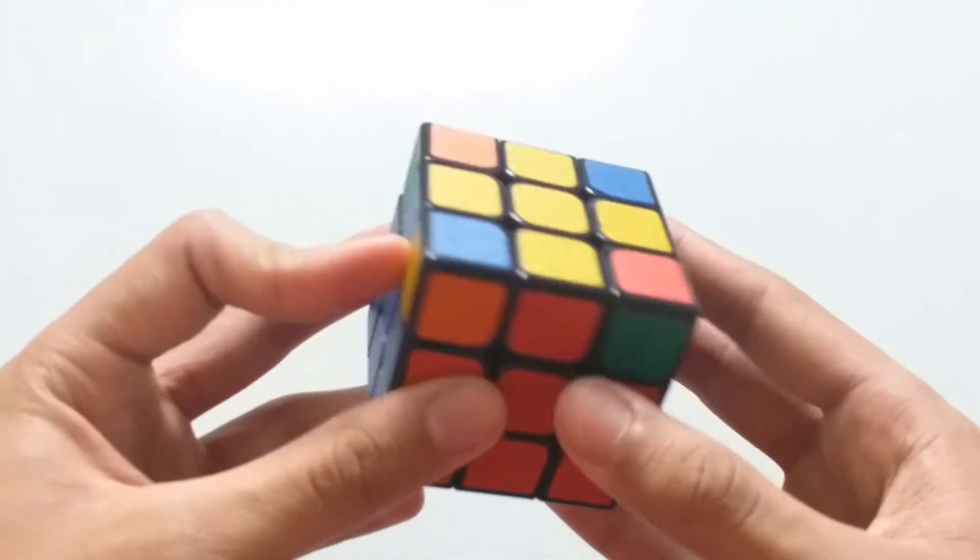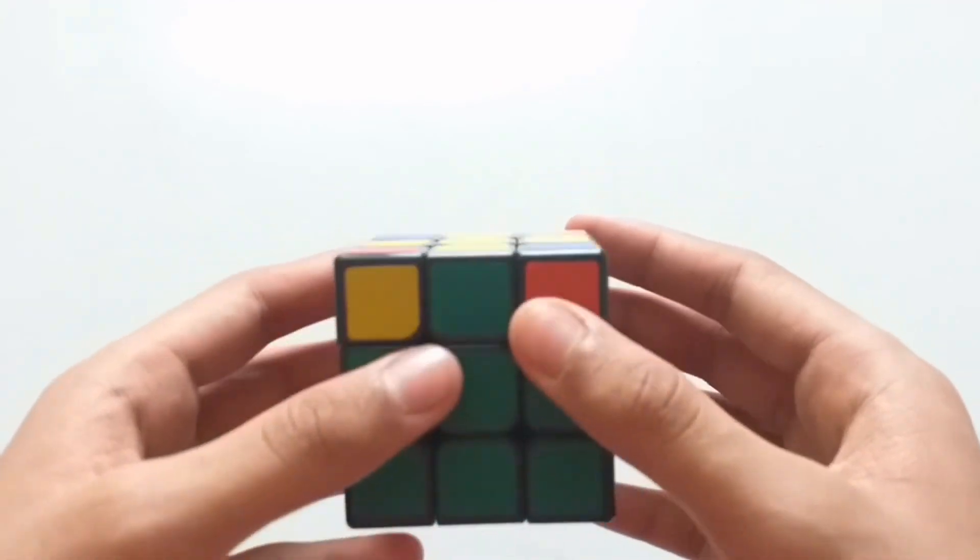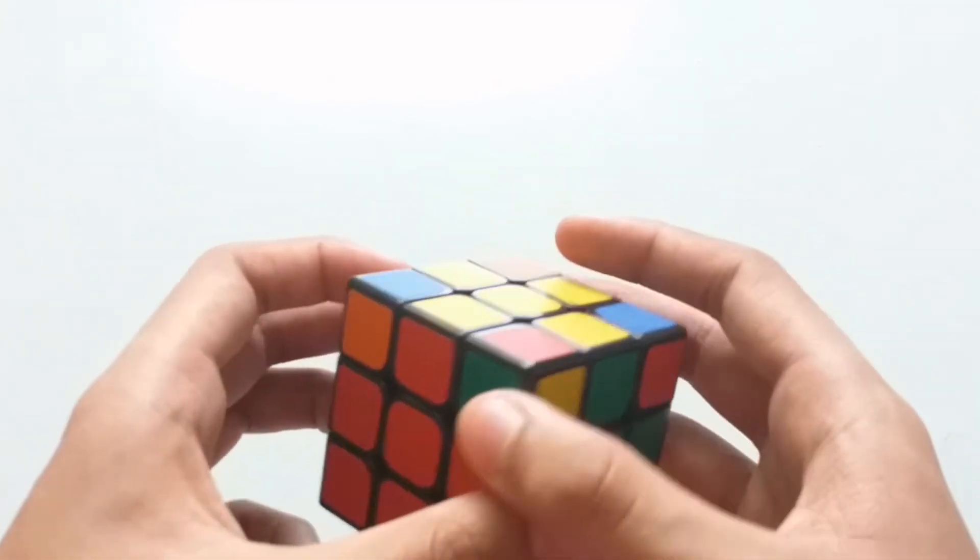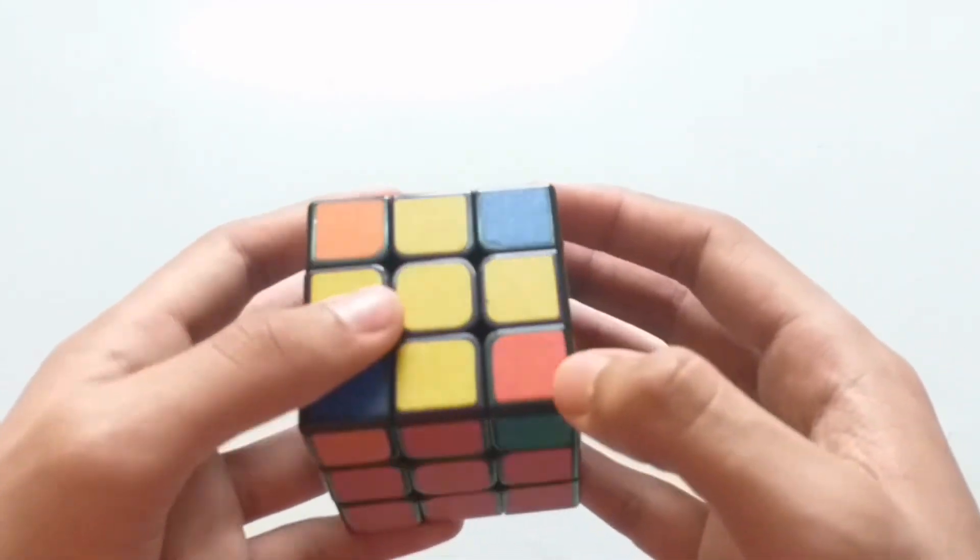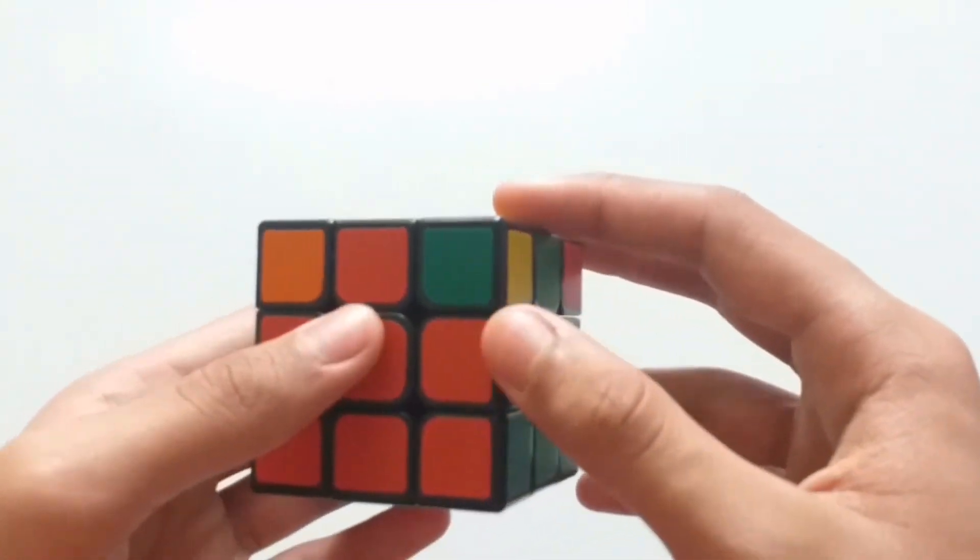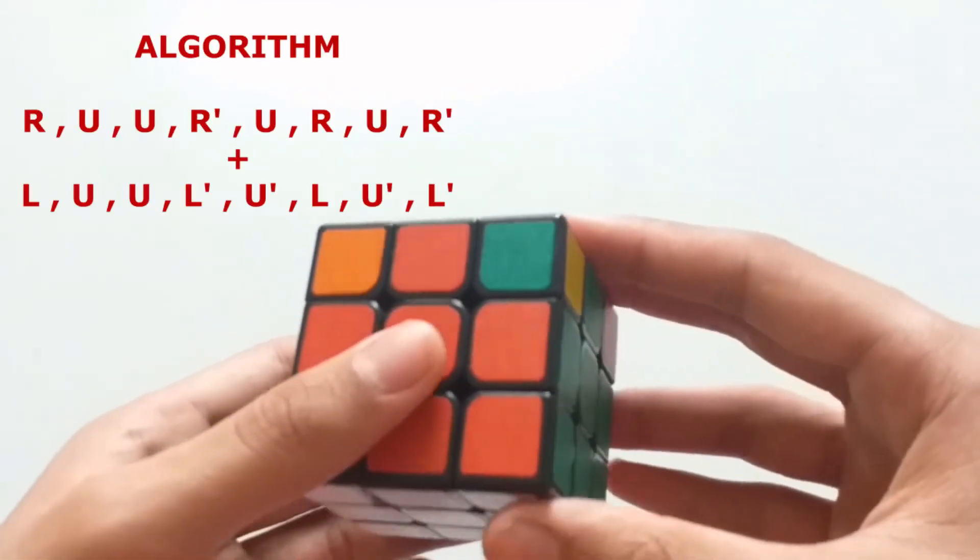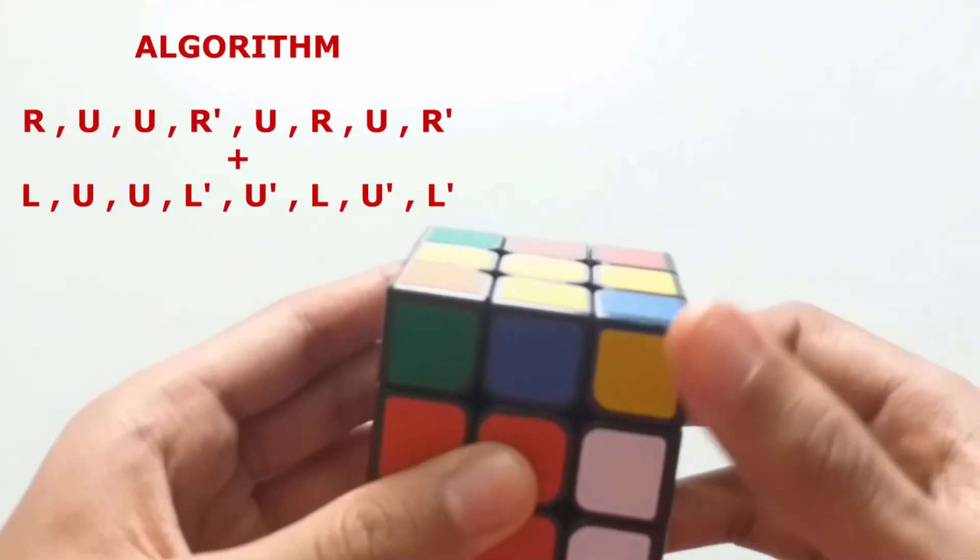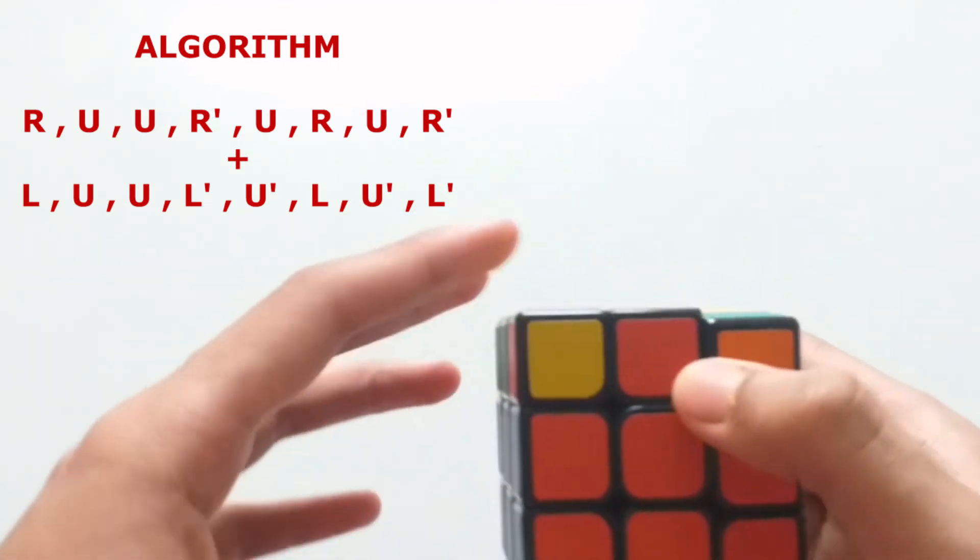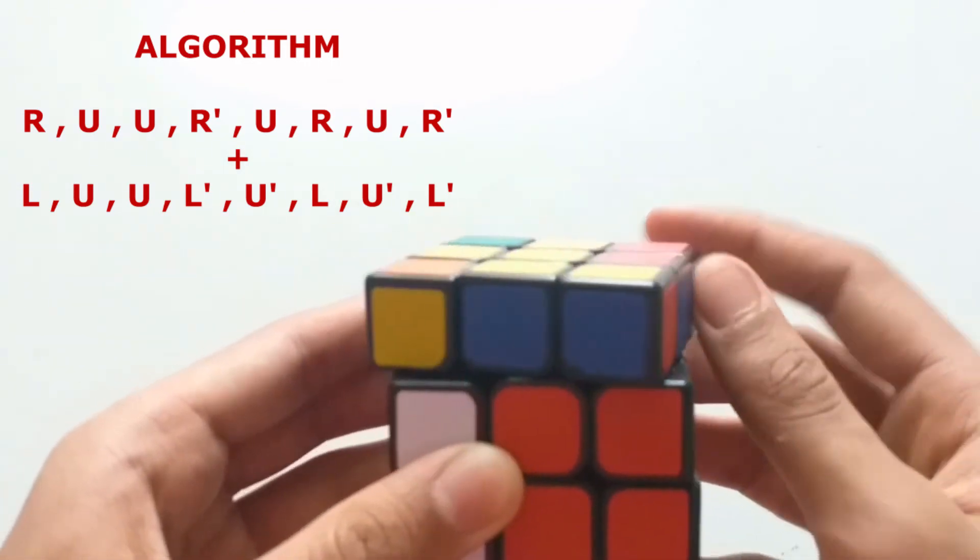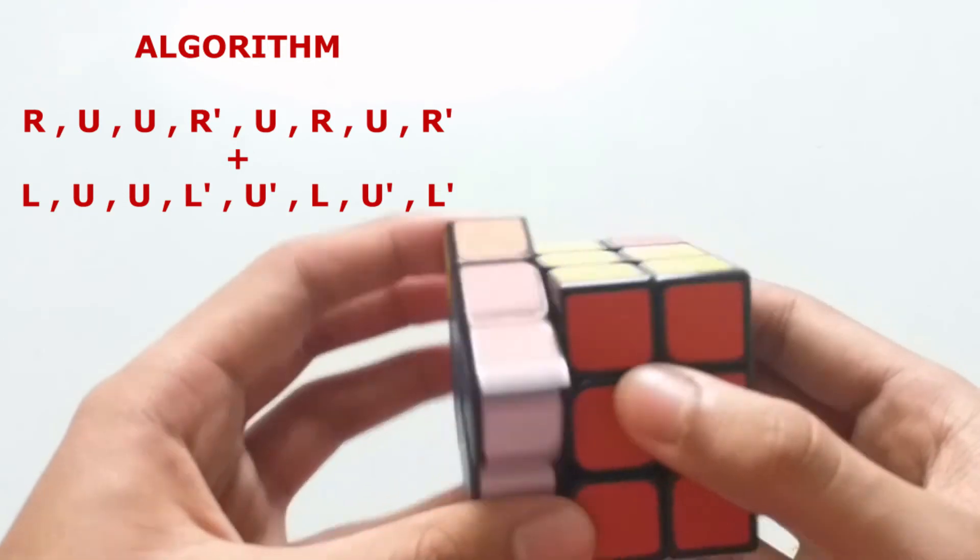Now we have to fill up these corners. Take a corner piece which matches with the three colors over here, use the algorithm. Now it's matched.